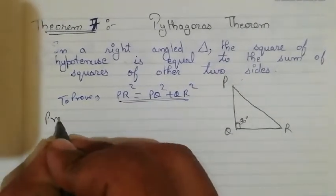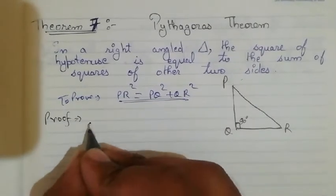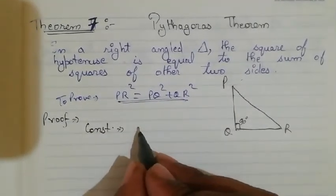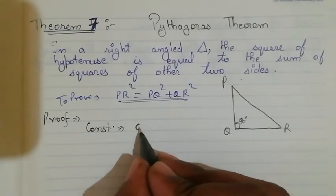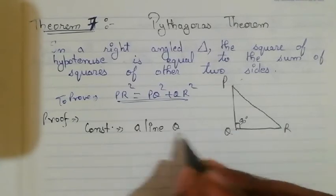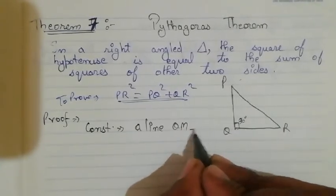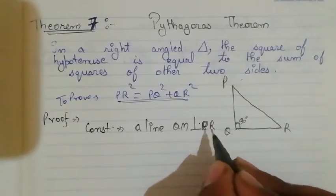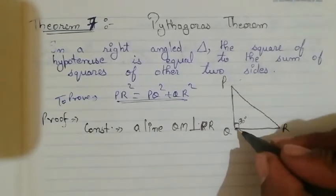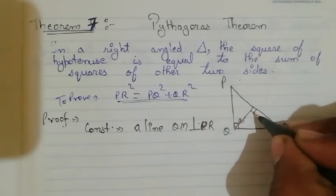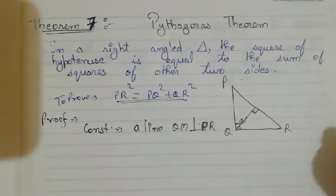For the proof, we need to do a construction. We will construct a line QM which will be perpendicular to PR. So we draw a line from Q to PR such that QM is perpendicular to PR.